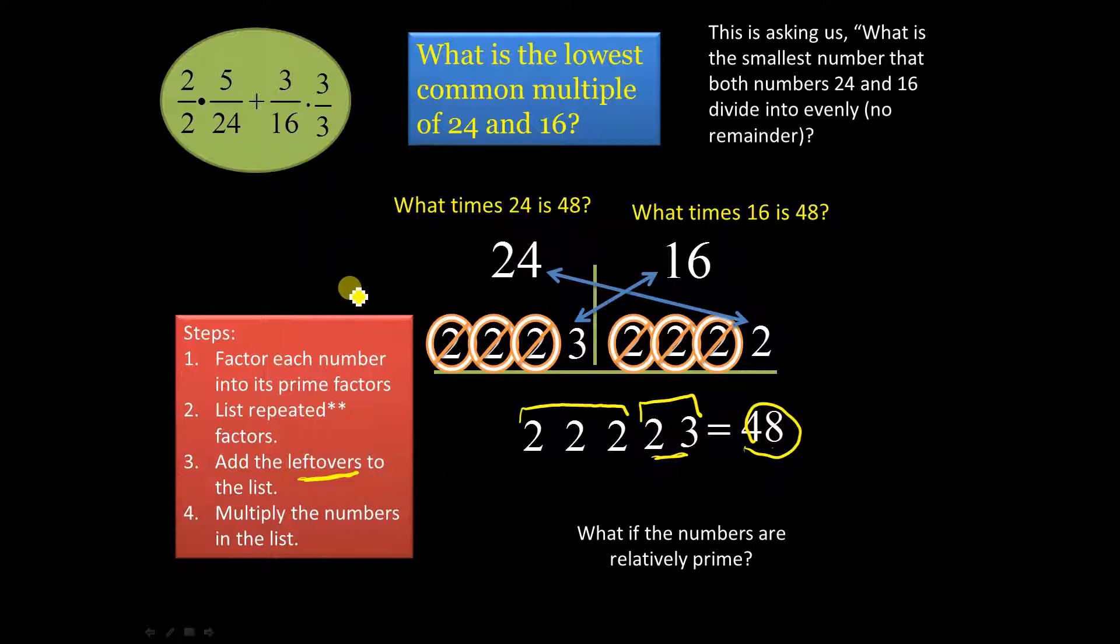Question again. What if they were relatively prime? What if you're asked to find the lowest common multiple of two numbers, or more, and they were relative primes? Well, we're going to answer that in a few minutes as well, at the end of the video.